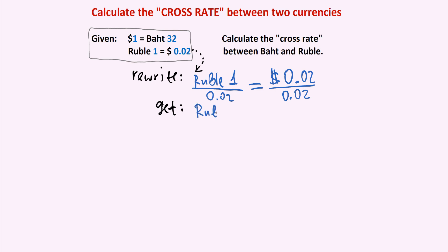On the ruble side, when we divide 1 by 0.02, we get 50. And on the dollar side, where we have 0.02 divided by 0.02, the 0.02 both cancel out and we are left with just one dollar. So let's switch sides. This is the same as $1 equals 50 Russian rubles.